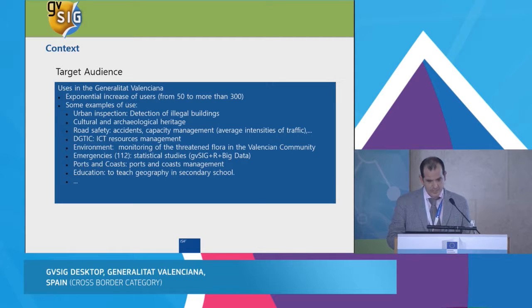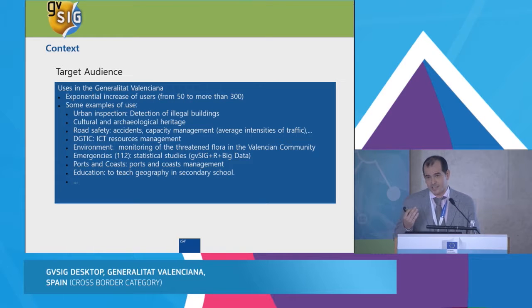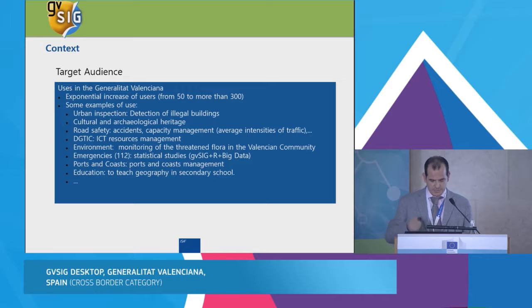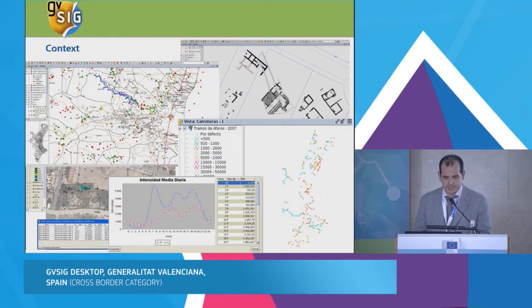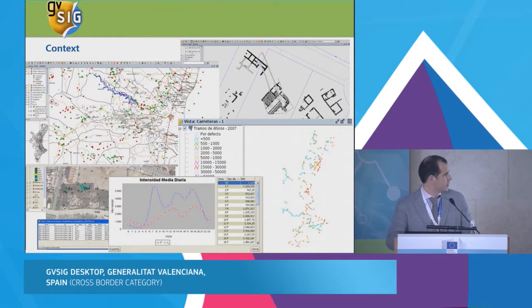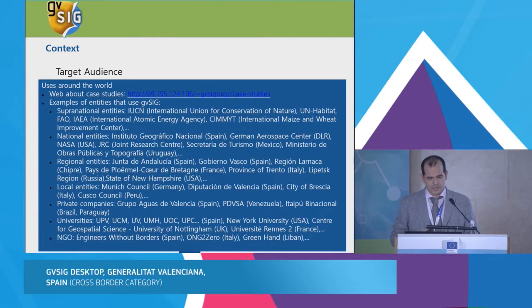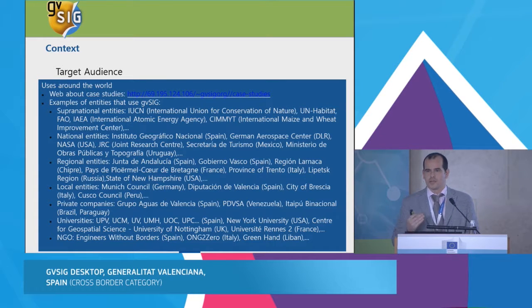In Generalitat Valenciana, the number of GIS users has been multiplied. To show you several examples, GVSIG is used for urban inspection, archaeology, environment, road management, and education. In this slide, you can see screenshots related to these uses. We are in the cross-border category, so we want to show you that today GVSIG is, without a doubt, an international project. As I said, it's used in more than 160 countries.